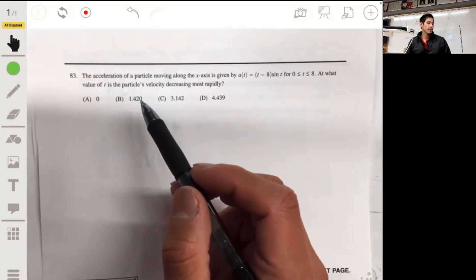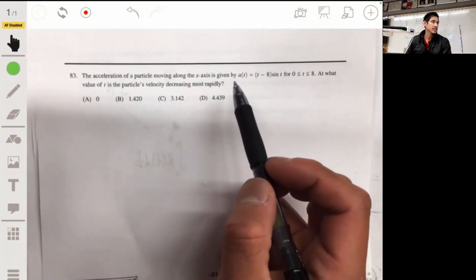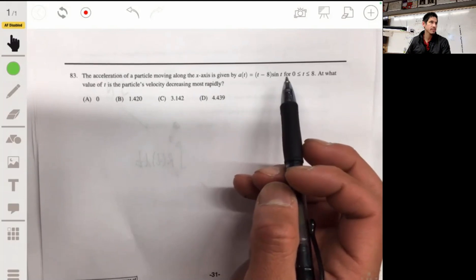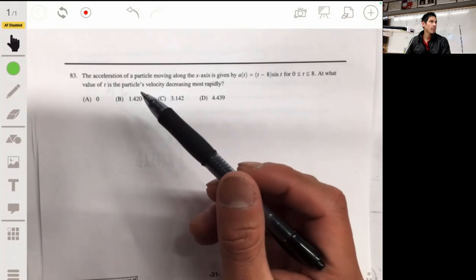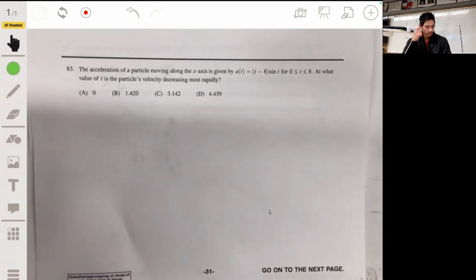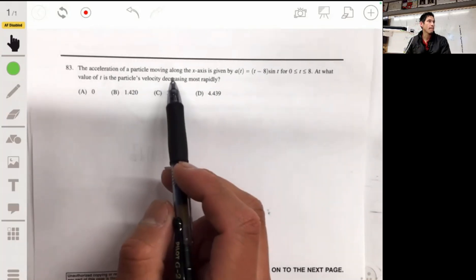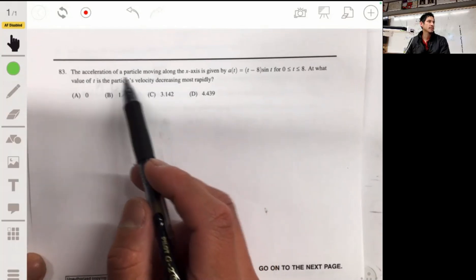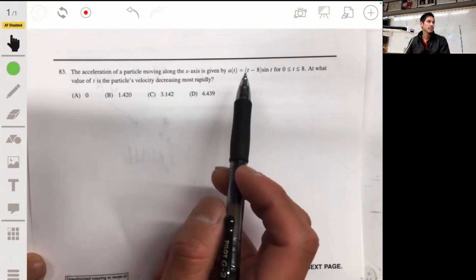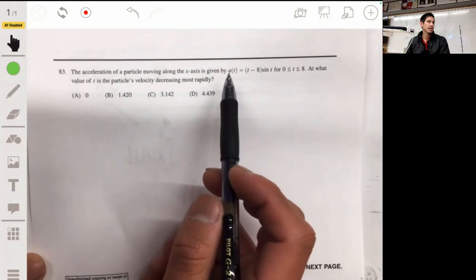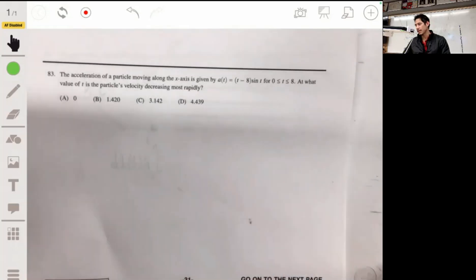Problem 83. The acceleration of a particle moving along the x-axis is given by a(t) = (t - 8)sin(t) for t between 0 and 8. At what value of t is the particle's velocity decreasing most rapidly? Remember, acceleration describes the rate of change of velocity. So if we just graph this, it's going to be decreasing most rapidly at the lowest value of a(t). So let's analyze the graph.